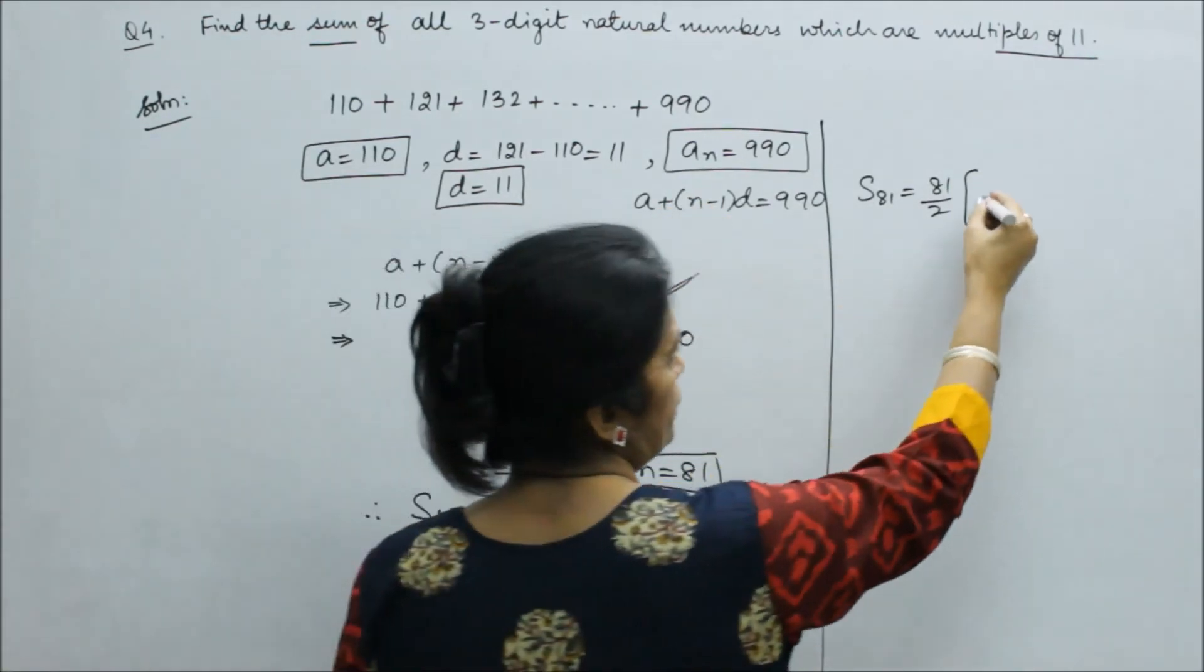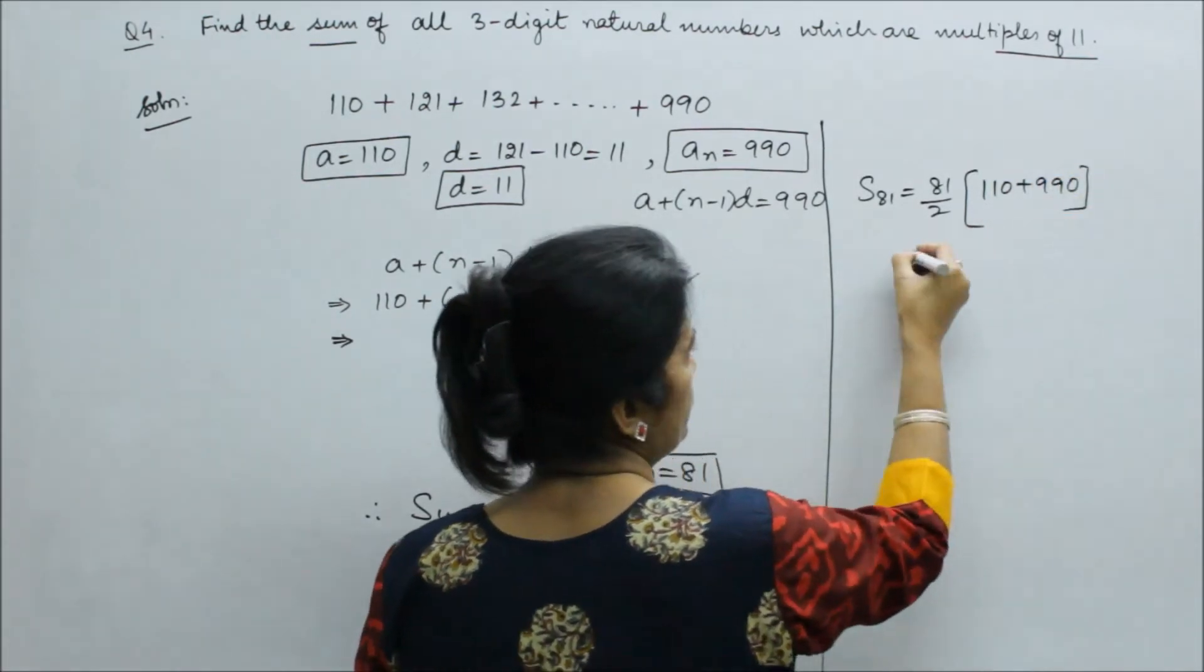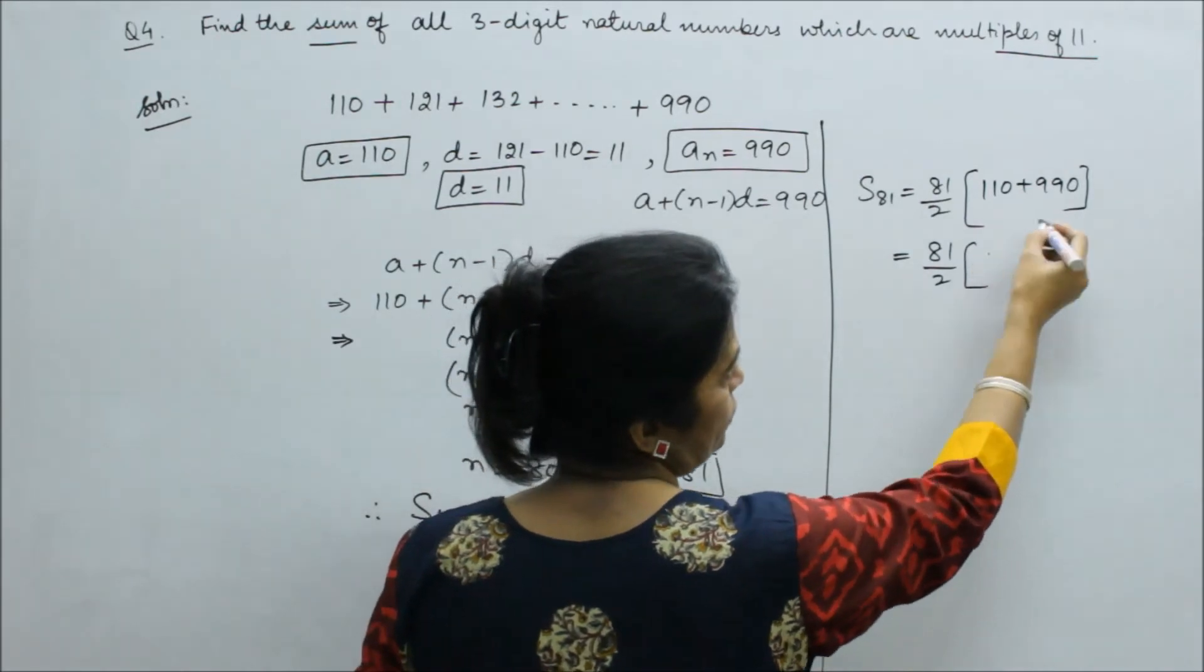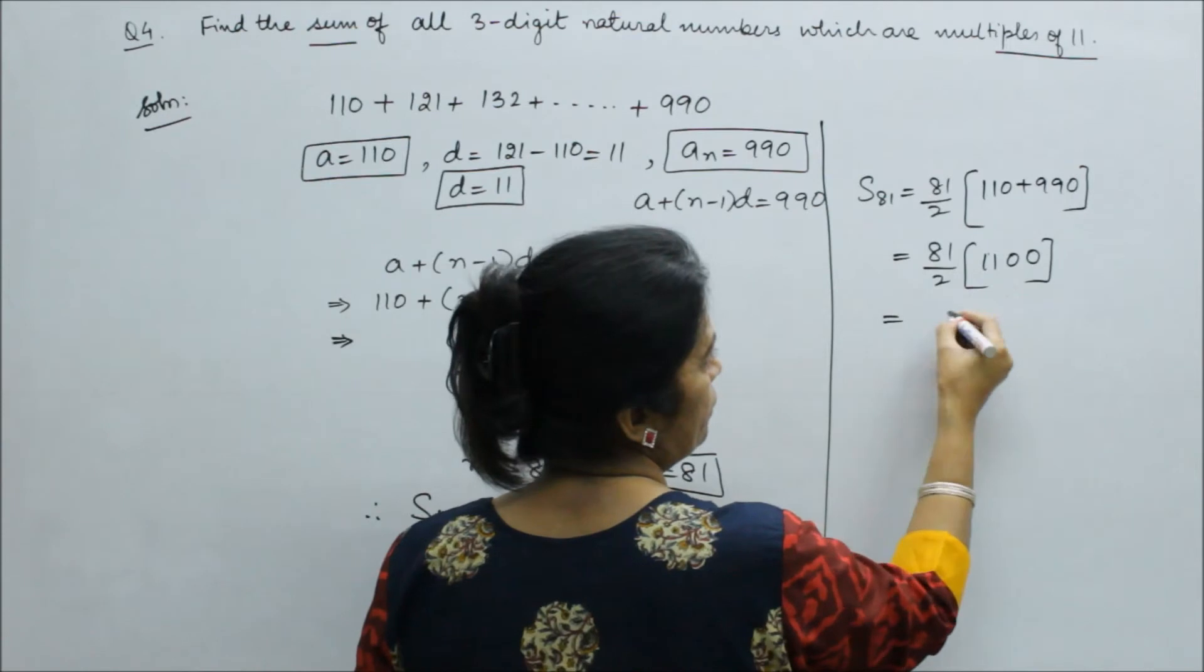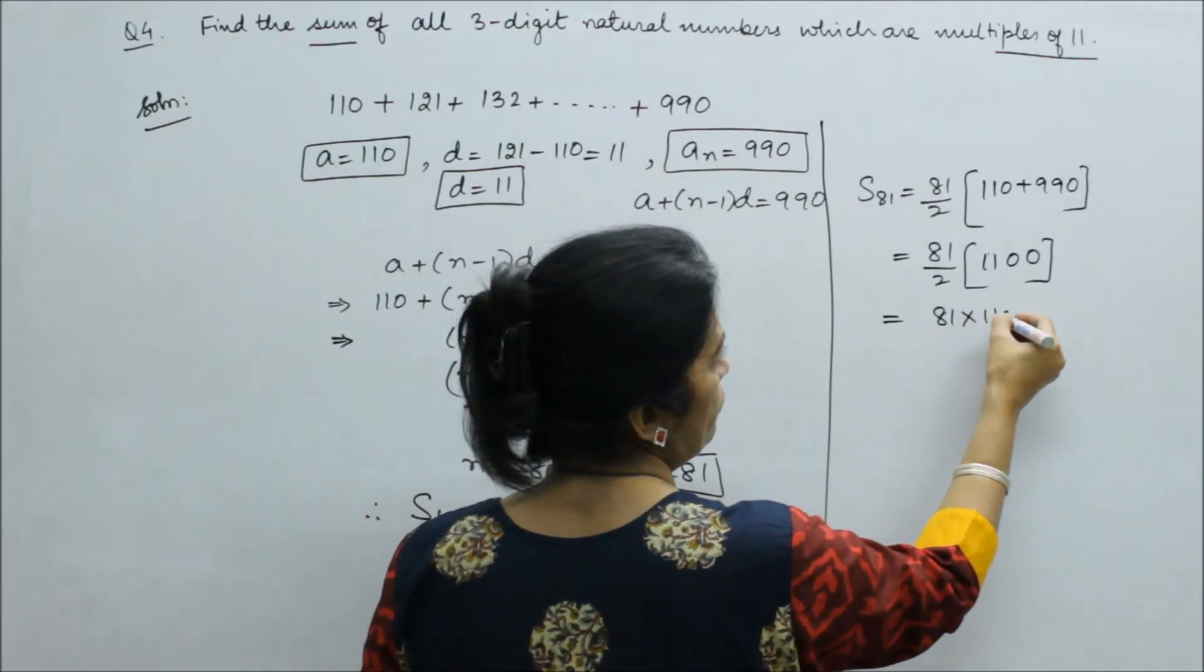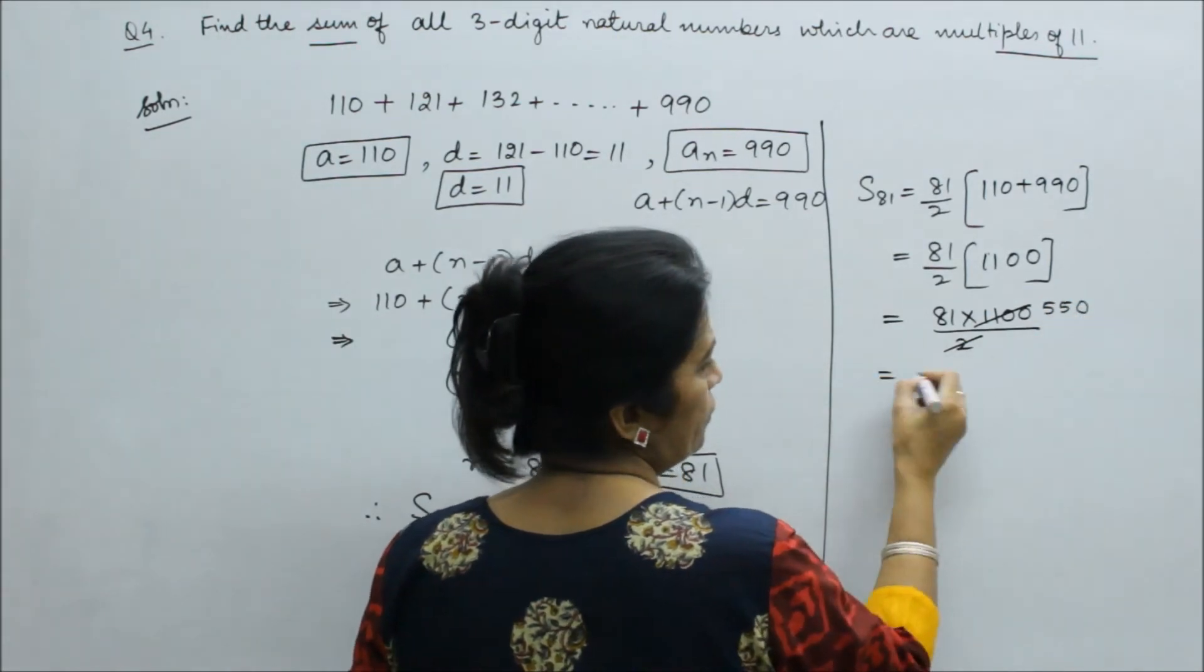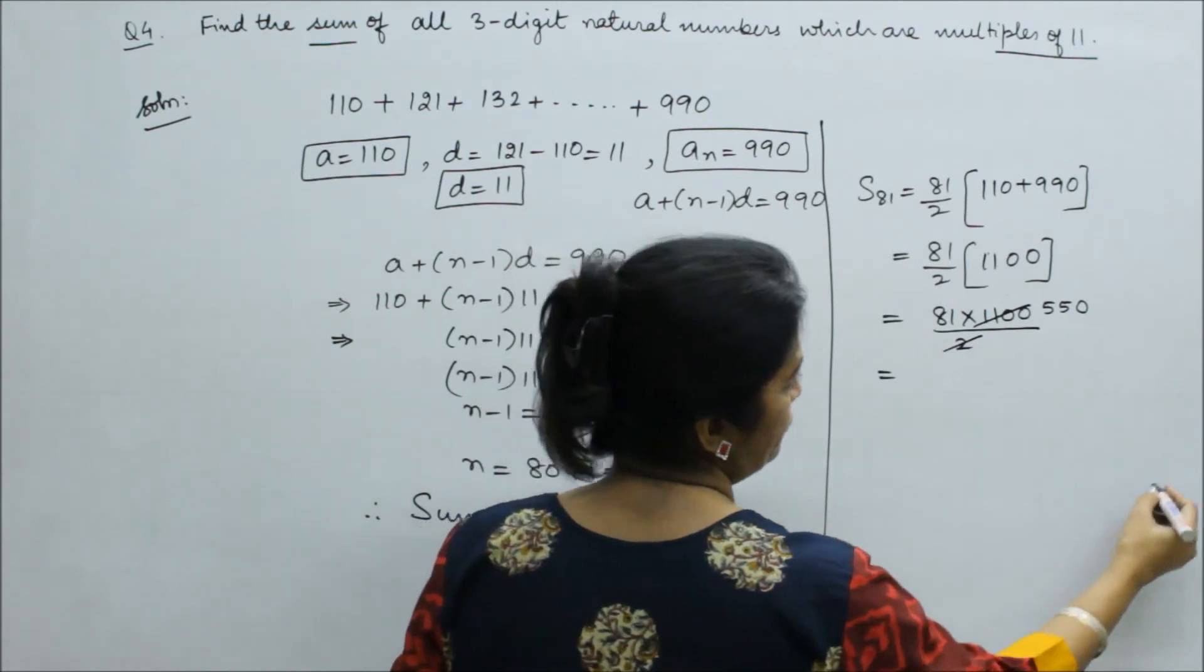a plus an equals 110 plus 990 equals 1100. So 81 divided by 2 times 1100. This is 81 times 1100 divided by 2, which is 81 times 550.